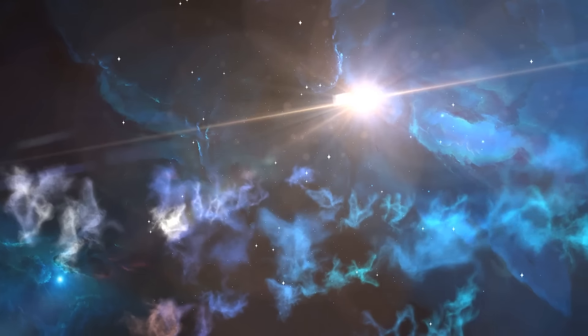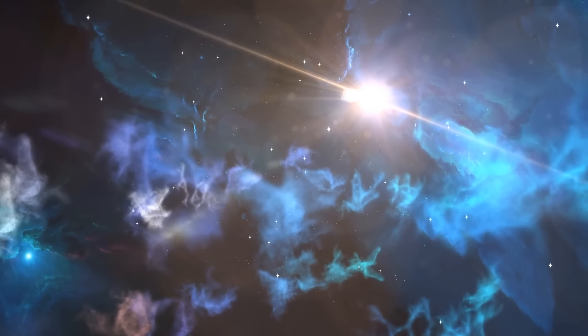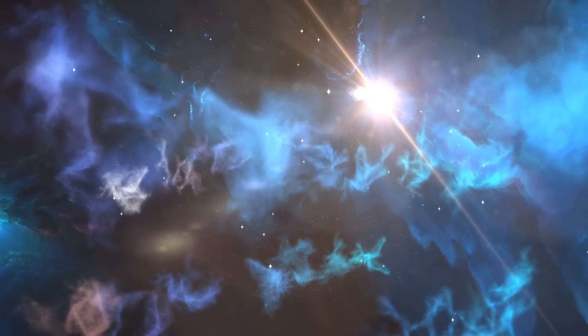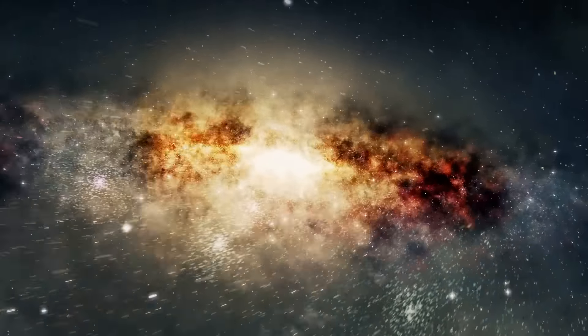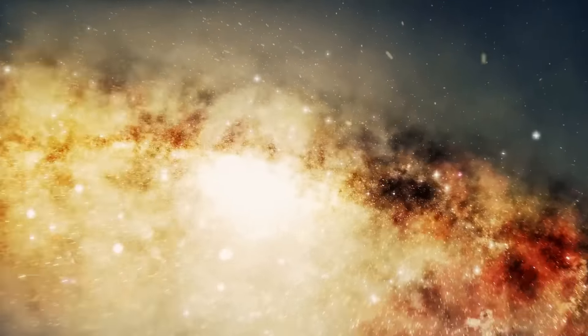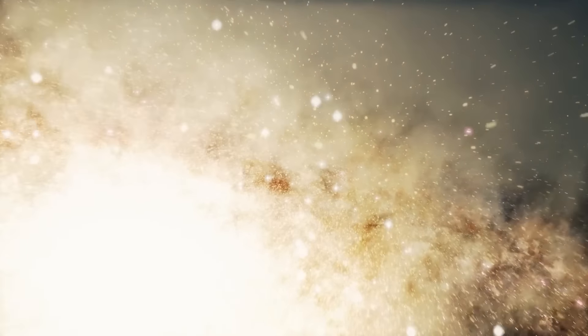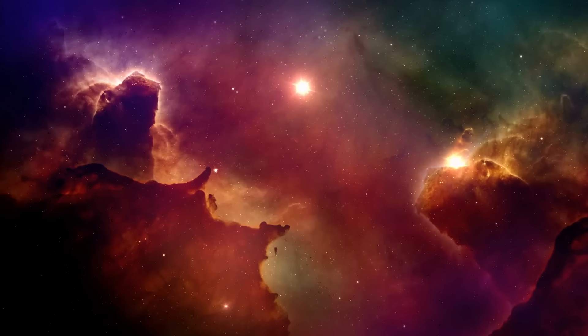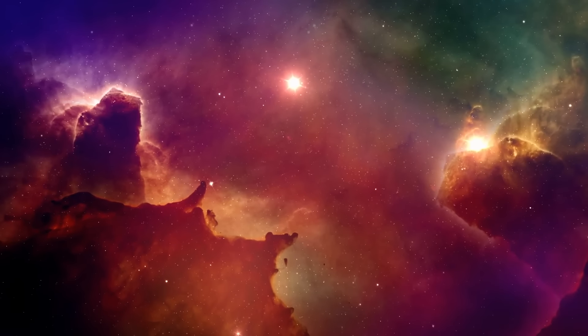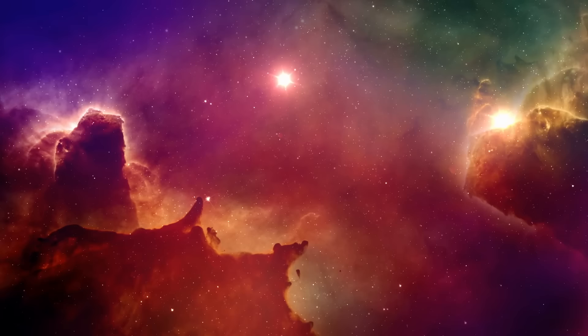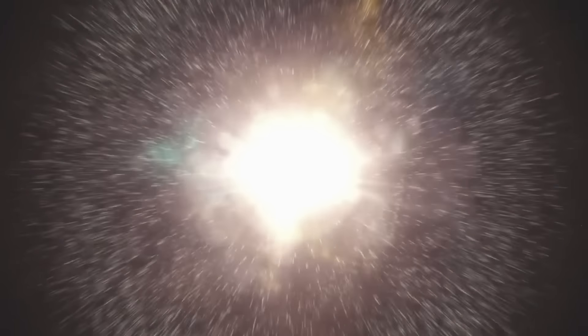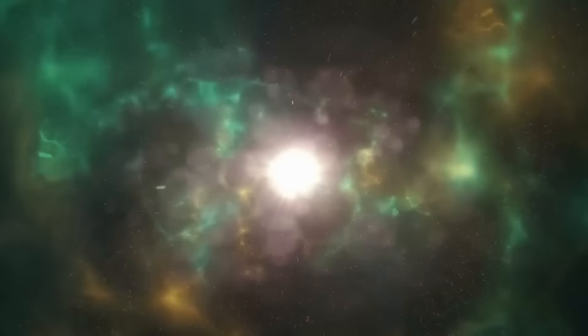The uncertainty arises because the processes leading to a supernova occur deep inside the star, hidden from direct observation. Advanced models and simulations are employed to understand these internal dynamics, but they can only approximate the actual conditions. Additionally, each star is unique in terms of mass, age, and chemical composition, factors that influence the entire supernova timeline.